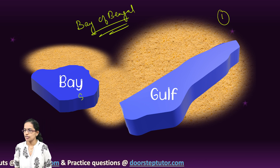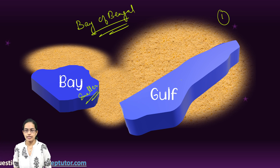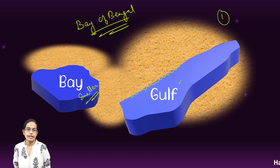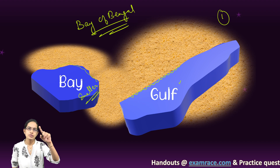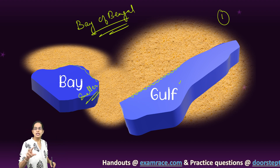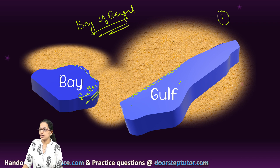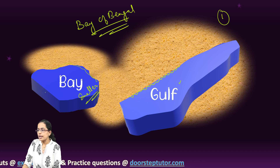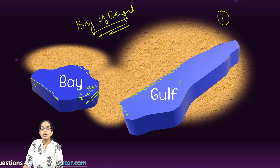As you can see in the two diagrams, Bays are smaller as compared to Gulf. Gulf are usually more indented as compared to Bay. Bays are less indented — they have more direct structures. The next important difference is that Bay has a larger opening, while Gulf has a smaller or narrow entrance.